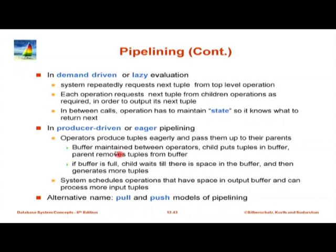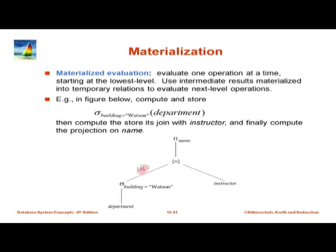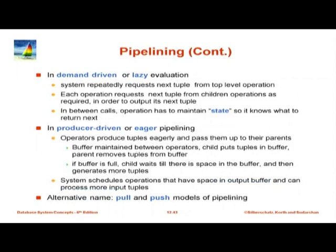Producer-driven pipeline goes the other way — each operator runs in parallel and as soon as it has a batch of tuples, it pushes them up to the next operation. The join gets batches from below and when it has enough, does the join and passes results on. Demand-driven pipelining is used far more often, although producer-driven is useful in parallel databases.